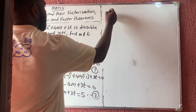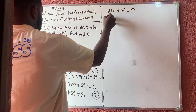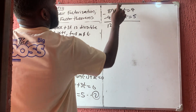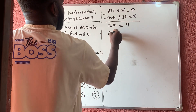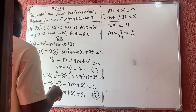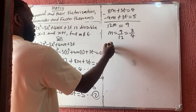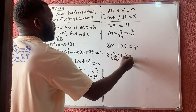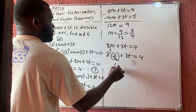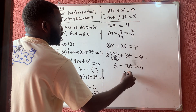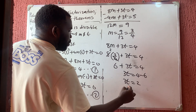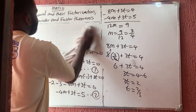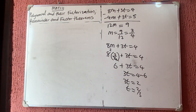So minus 4m plus 3t equals 5 — equation 2. Solving simultaneously: equation 1 is 8m plus 3t equals 4, equation 2 is minus 4m plus 3t equals 5. Subtracting gives 12m equals 9, so m equals 3 over 4. Substituting back into equation 1: 8 times 3/4 plus 3t equals 4, giving 6 plus 3t equals 4, so 3t equals minus 2, and t equals 2 over 3.